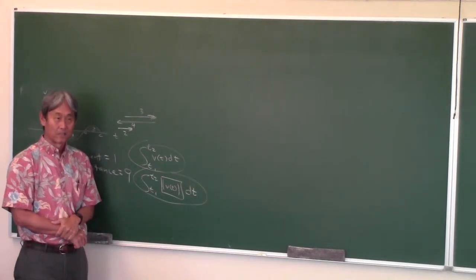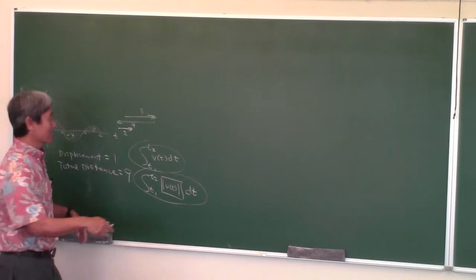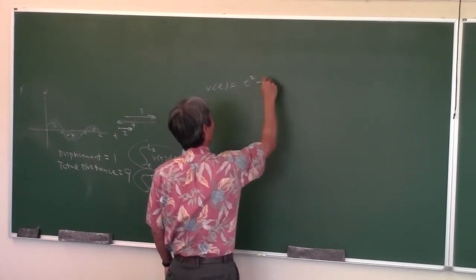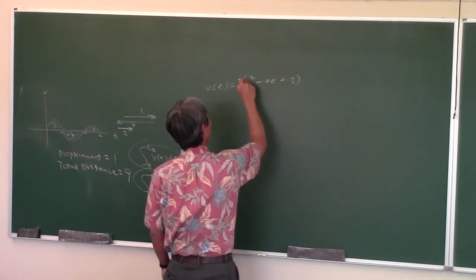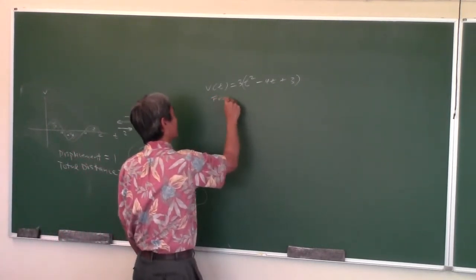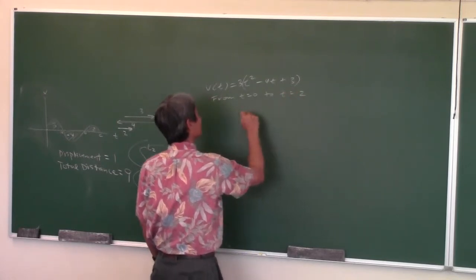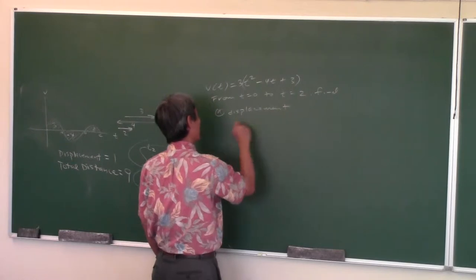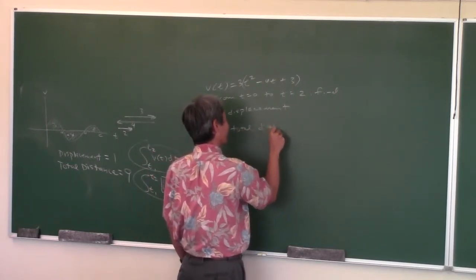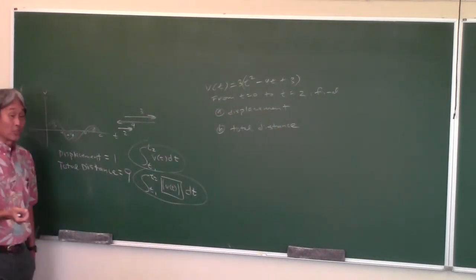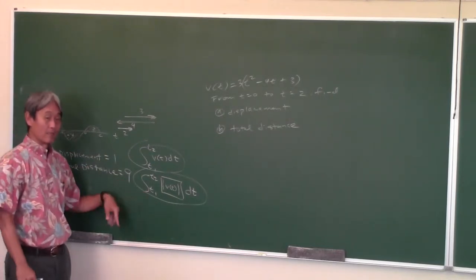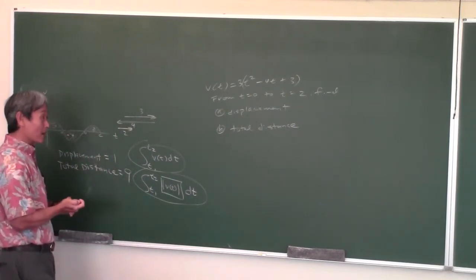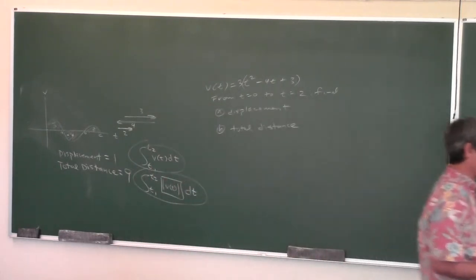Tonight's homework — the first part gives you a velocity function. Let's do an exact example. Let v(t) = 3t² − 12t + 9. From T = 0 to T = 5, find: A) the displacement of the particle, and B) the total distance traveled. Sometimes you can use a calculator, but if you don't have one you've got to do the work. If you're smart, you can answer both questions by doing the work for one problem.